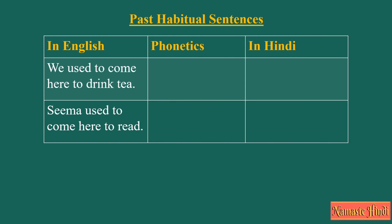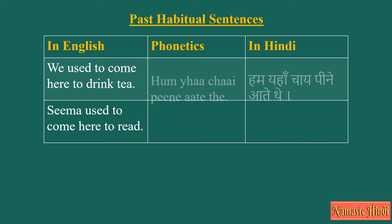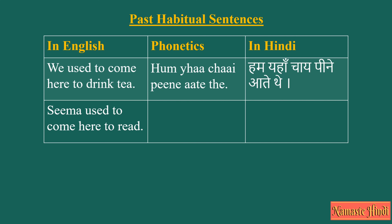Two-verb sentences: When there is a second action or verb in Hindi, we use the masculine plural form. For example, 'We used to come here to drink tea' — Hum yahaan chai peene aate the. So 'to drink', which is the second verb or action in Hindi, would be 'peene', which is a masculine plural verb.